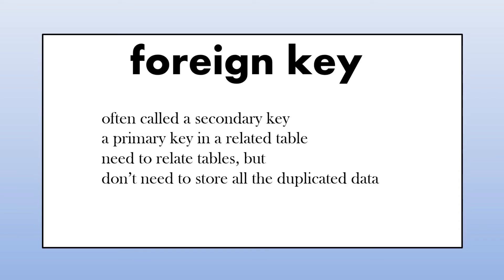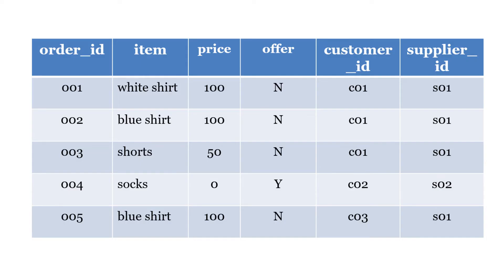Our order table with the order ID, item, price, and offer would be separated. Now we still need the detail of the customer and the supplier in that table, so we can have what's called a foreign key, sometimes called a secondary key. That's the primary key in the related table. In our example, we had the customer ID and the supplier ID, and that helps us not store duplicate data. Here you can see the same table, but now instead of the customer name, we have the customer ID, which is unique, and the supplier ID, which is also unique.